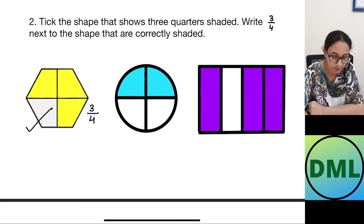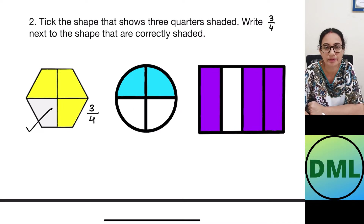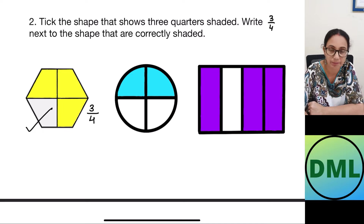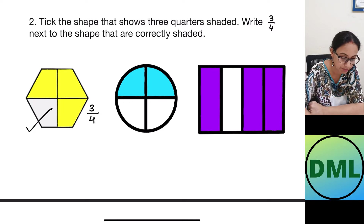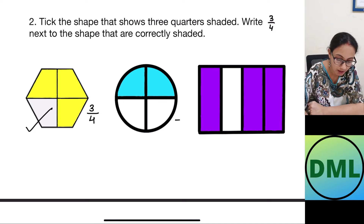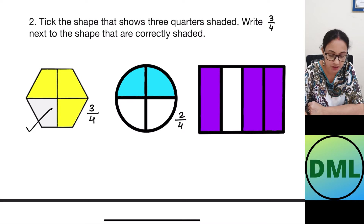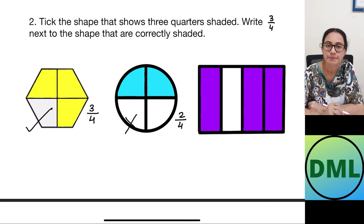Now let's look at the next shape — this is the circle. It has been divided into one, two, three, and four parts. Are the parts equal? Yes. How many parts are shaded? One, two, and three. But wait — out of four parts, only two parts are shaded, so this shape is two by four, not three by four. This is not my answer.